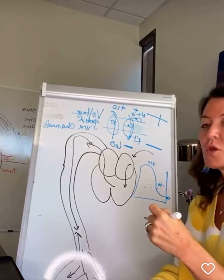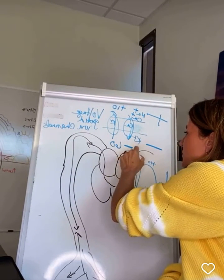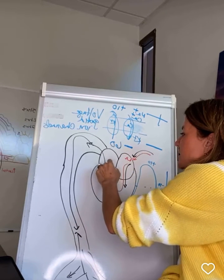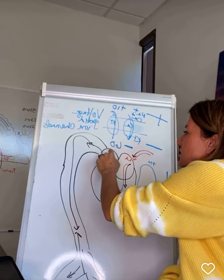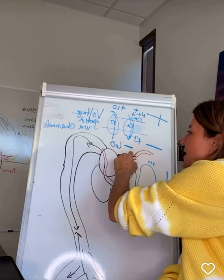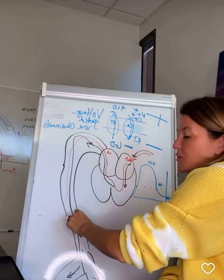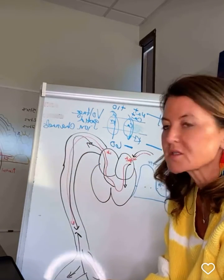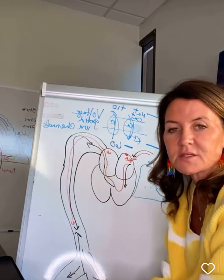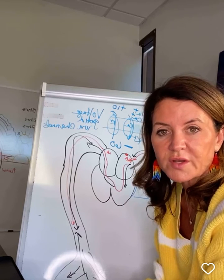Your heart has a left atrium that pumps blood in. The blood flows through your heart, comes out of your right atrium, out of your left atrium, into your aorta, and down through your body. The way this works is you have a pacemaker node up here that sends electrical impulses through your cardiac muscle.